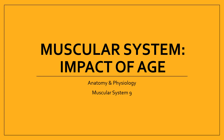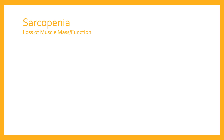Welcome to this video on the muscular system. In this video we're going to think about the impact of age on your muscles — what does age do as you get older? How does it affect the way that your muscles work, their size, efficiency, and function? We're going to focus in on one concept in particular, and that concept is sarcopenia.